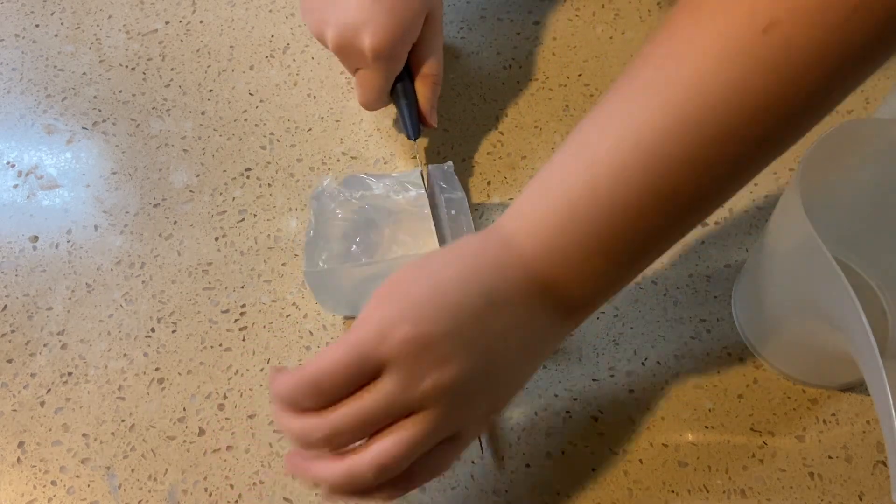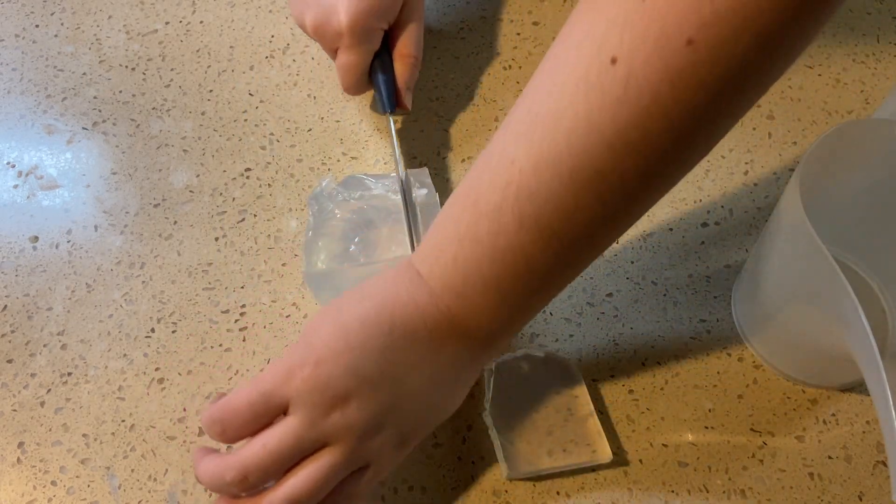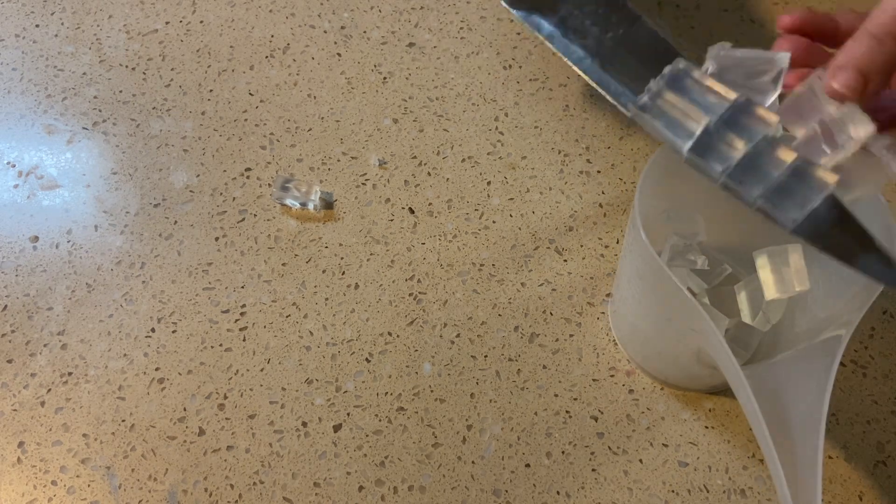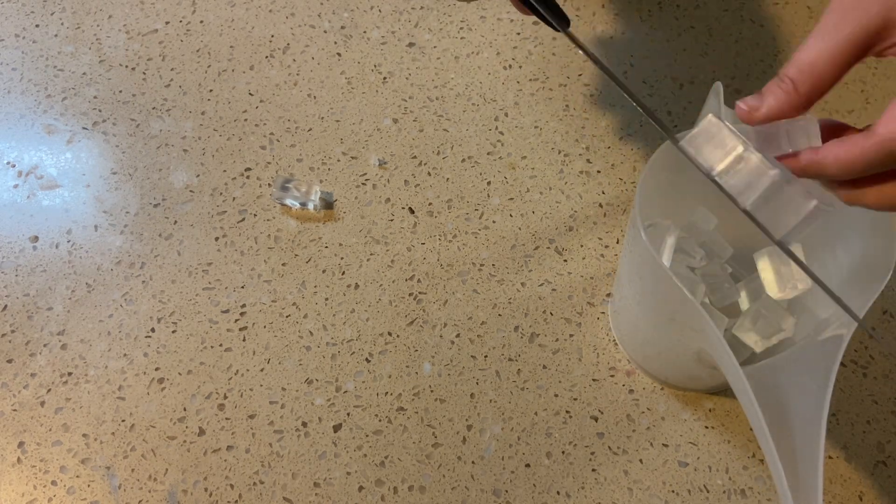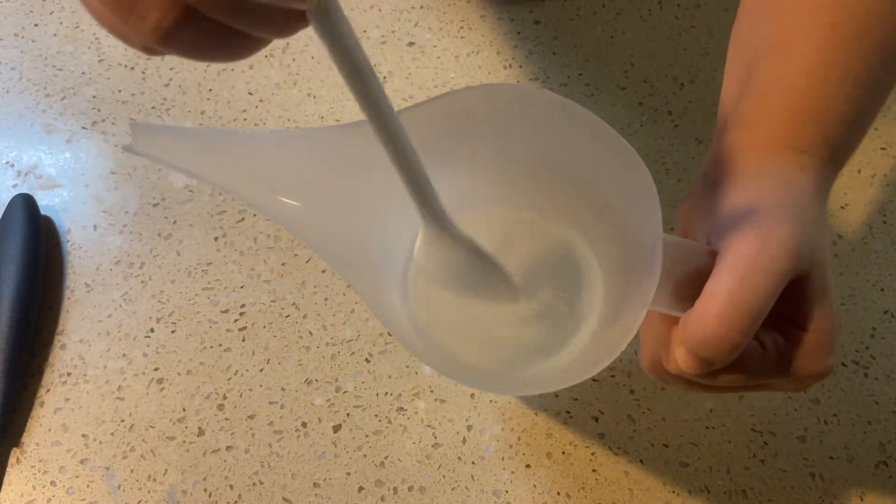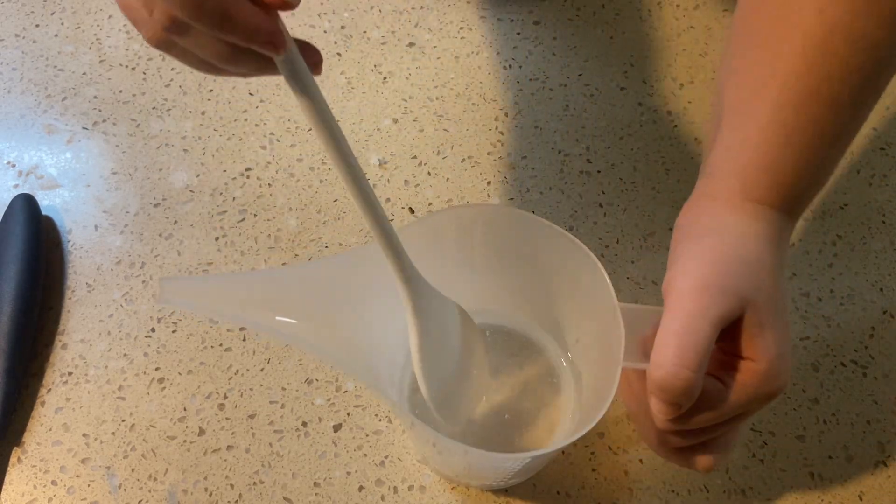I started off by chopping up enough glycerin soap for one bar. I then put it into my container for melting. After I melted down all my soap I made sure that there were no clumps left and it was all smooth.